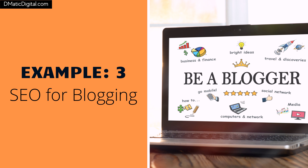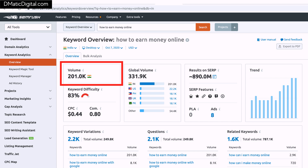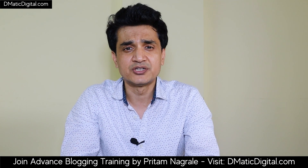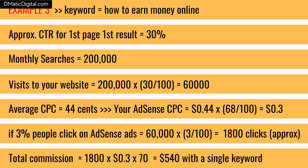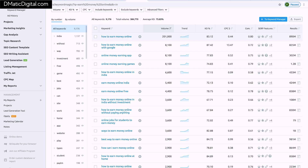Example three: you're running a niche blog with Google AdSense as your main income source. Consider a post 'how to earn money online.' According to SEMrush, there are around 200,000 searches monthly. If your website ranks first, you receive around 60,000 visits. With a 3% CTR on AdSense ads, around 1,800 people click your ads. The CPC of this keyword is 44 cents. Google pays 68% to publishers, so you receive about 30 cents per click — totaling $540 from this single keyword.